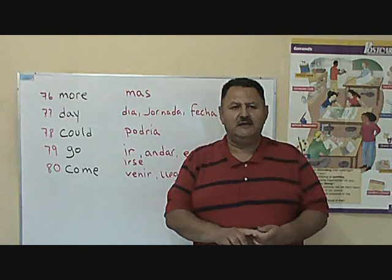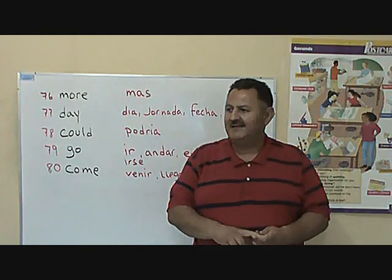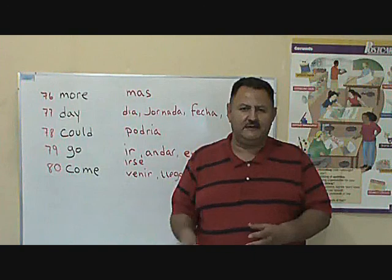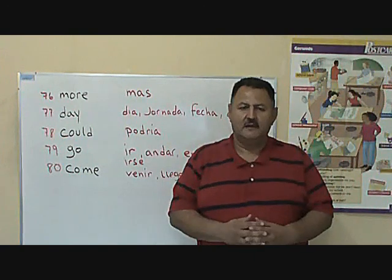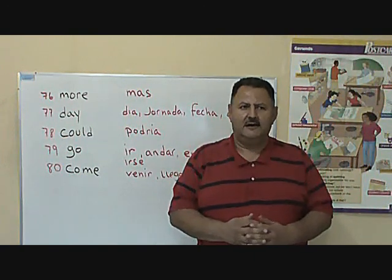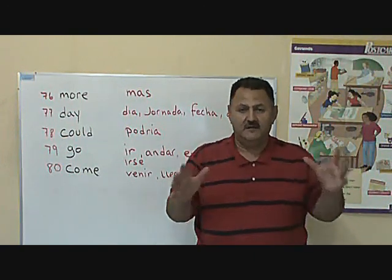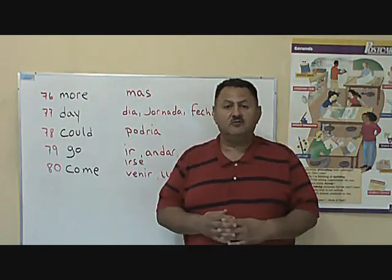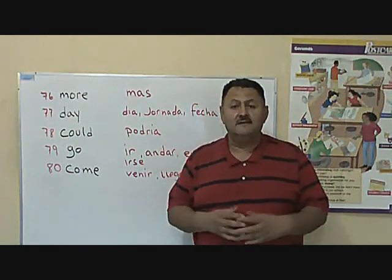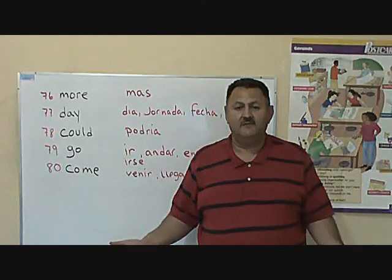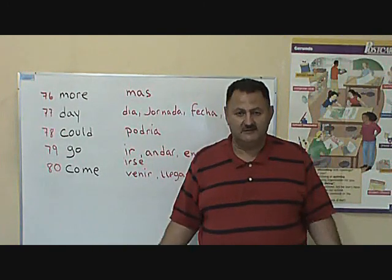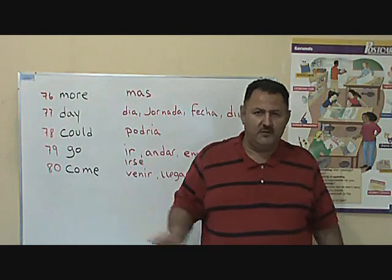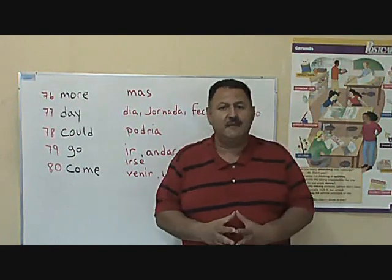Come could also mean something that passed, like something that came to be. A better example: February 29th comes every four years. So it means every four years, February 29th passes.